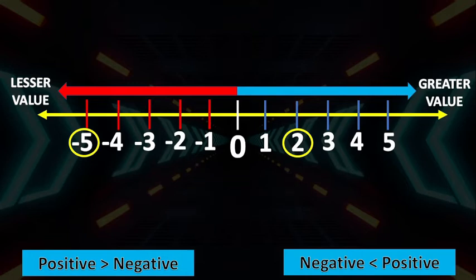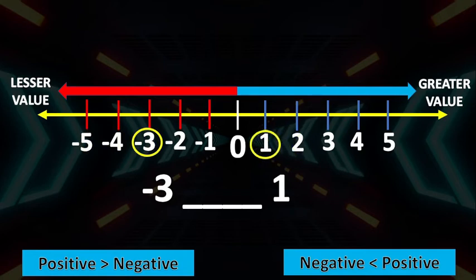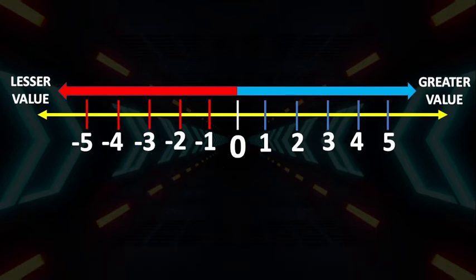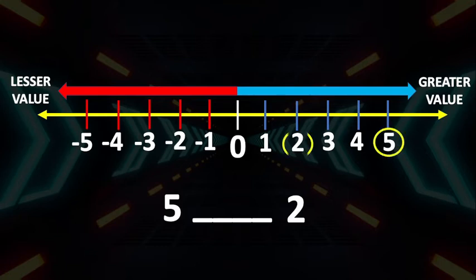Let's have another one. Let's compare negative 3 and positive 1. We are comparing negative integers and positive integers. We all know that all negative integers are less than positive integers. This means that negative 3 is less than positive 1. Let's compare positive 5 and positive 2. Positive 5 and positive 2 are both positive integers. Since in positive integers the bigger the number, the greater its value — therefore, positive 5 is greater than positive 2.